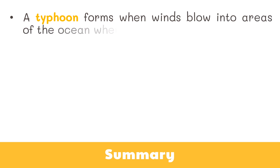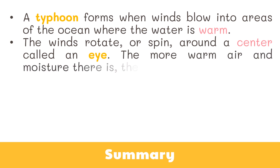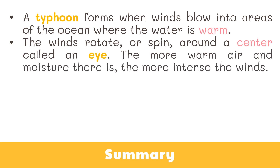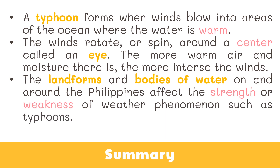A typhoon forms when winds blow into areas of the ocean where the water is warm. These winds collect moisture and rise, while colder air moves in below. This creates pressure which causes the winds to move very quickly. The winds rotate or spin around the center called an eye. The more warm air and moisture present, the more intense the winds. Landforms and bodies of water on and around the Philippines affect the strength of weather phenomena such as typhoons — notably, landforms lessen the strength of typhoons when winds impact them, while oceans provide higher rainfall and strength.